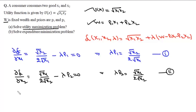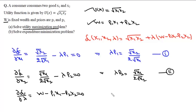Differentiating with respect to λ gives ∂L/∂λ = w − p1·x1 − p2·x2 = 0, which gives us back our original budget constraint. This is our third equation.